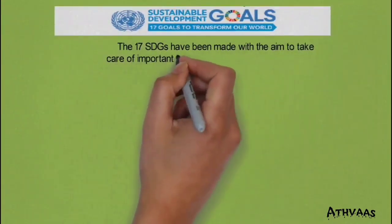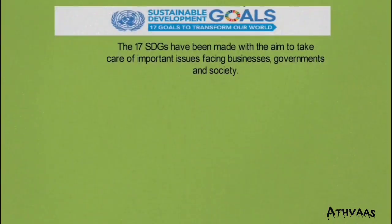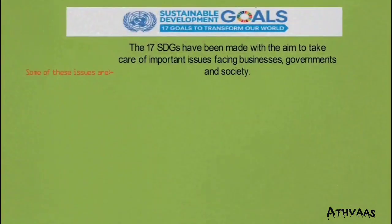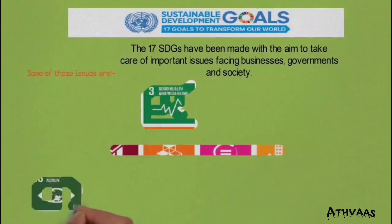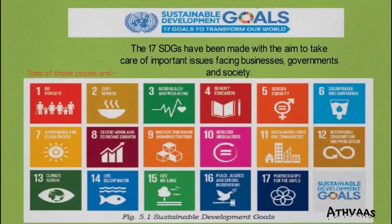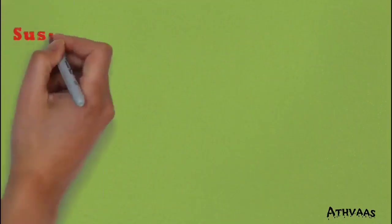There are 17 development goals for transforming the lives of millions of people around the world, affecting businesses, governments, and citizens everywhere. Some of these goals include: no poverty, zero hunger, quality education, gender equality, clean water and sanitation, affordable and clean energy, decent work and economic growth, reducing inequalities, and life on land.